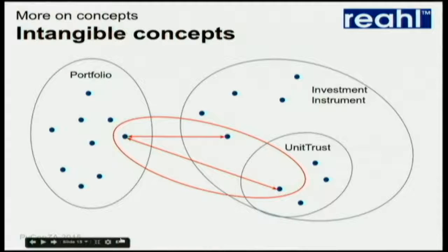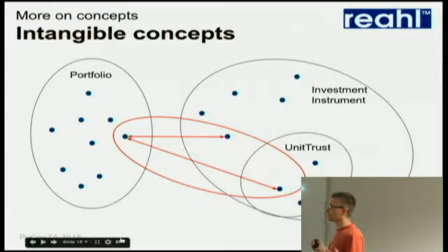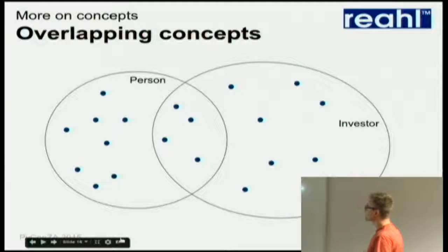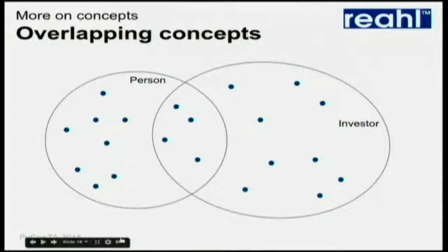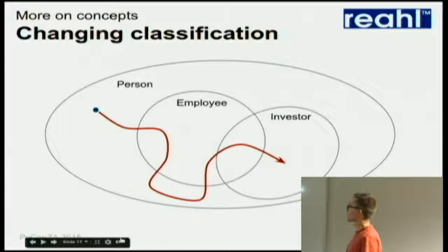Of course, we don't use chairs and desks in programs. We typically deal more with intangible concepts — here's a real-world example from the financial industry. These things exist purely because we say, let's agree there is something like a portfolio, which is the thing in which I keep track of which investment instruments I own. None of those things really exist in the real world. Something that people don't always keep in mind is that in a conceptual model, concepts can overlap — sets intersect. I can be both a person and an investor at the same time, which is valid. And how I am classified can change over time — I can go from not employed to being employed and also be an investor.